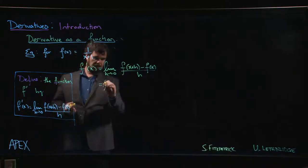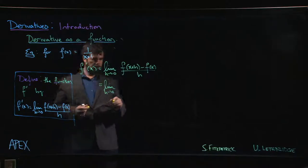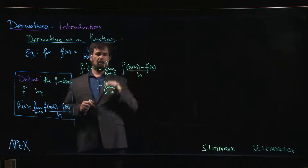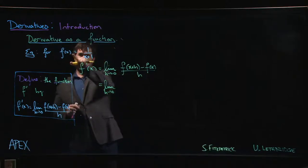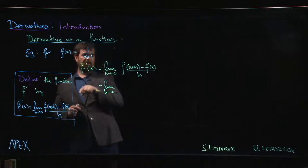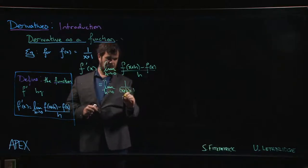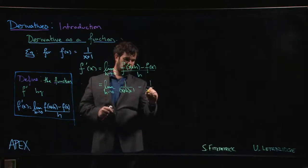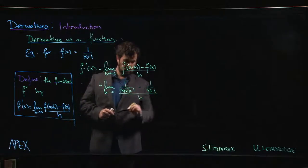The limit as h goes to 0 of f of x plus h. Remember, f of x plus h means we take x plus h and we plug it in for x in the formula for f of x. So x appears here, so this x gets replaced by an x plus h, and then plus 1 in the denominator, minus f of x, which is 1 over x plus 1, whole thing divided by h.